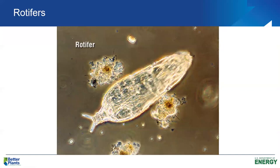Rotifers are very important — they swim around, with some having a single head and some a double head. The analogy is a Norelco triple-header electric razor with rotating heads. Rotifers usually have one or two rotating heads with cilia moving round and round. They swim among clumps of bacteria and can actually use their head to pull in bacterial flocs as a source of food.